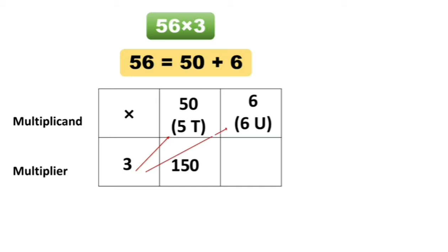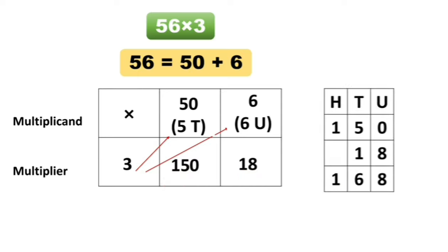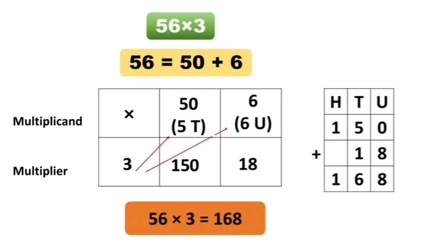Now let's multiply 3 and 6. 3 × 6s are 18. Now let's add 150 plus 18: 150 plus 18 is equal to 168. So the answer is 56 multiplied by 3 is equal to 168.